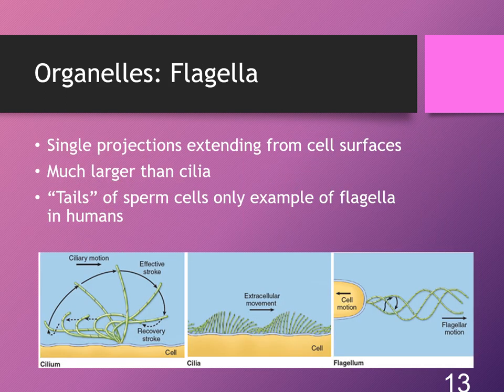Flagella are single projections extending from the cell surface, kind of like a tail. An example in the human body is the tail of the sperm cell that helps to propel it forward as it searches for the egg.